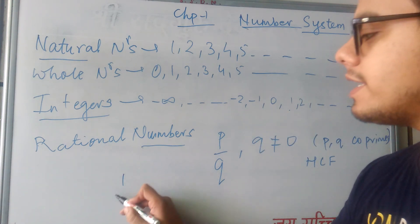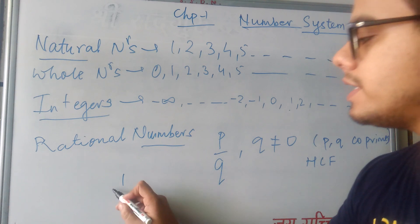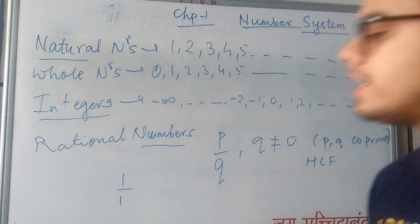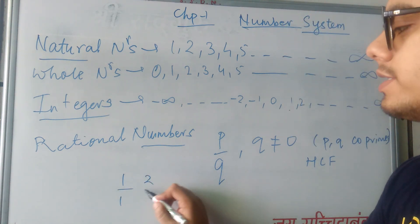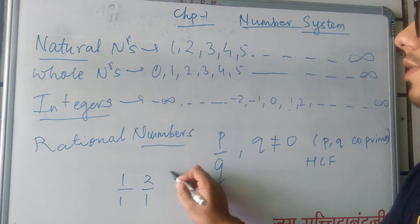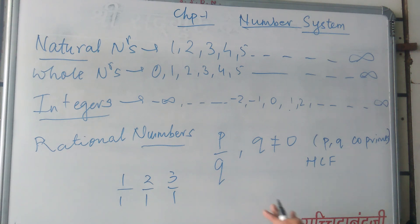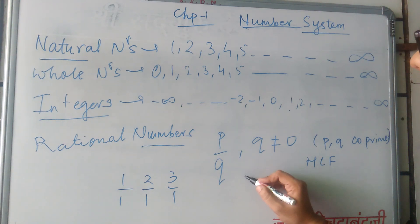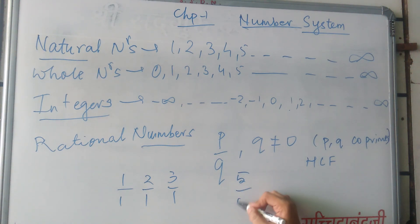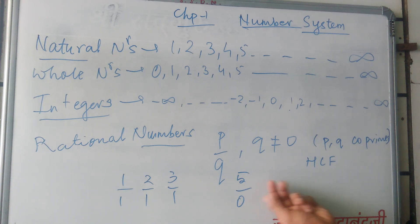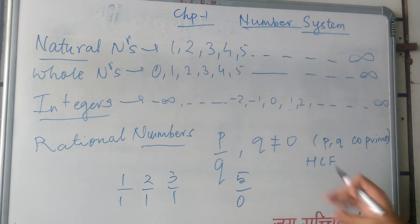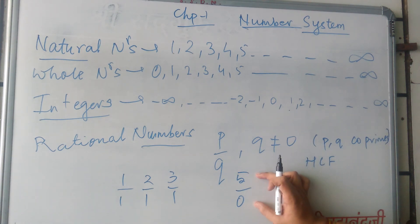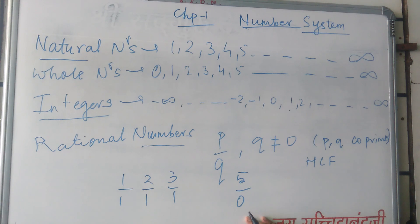That means they have HCF 1, or I can simply say that P upon Q is in simplest form. Now, 1 is a rational number — it can be represented as 1 upon 1. 2 is rational as 2 by 1, 3 by 1. But when we have 0 in the denominator — for example, 5 upon 0 — this is an irrational number. When 0 is there in the denominator, the number becomes irrational.